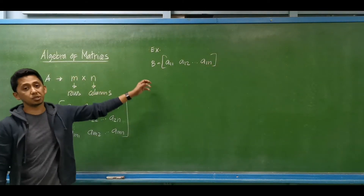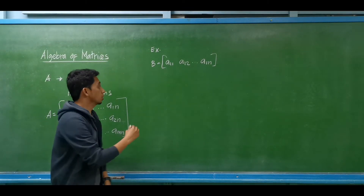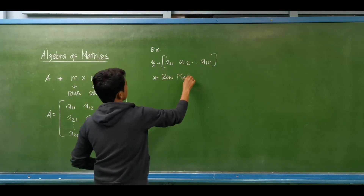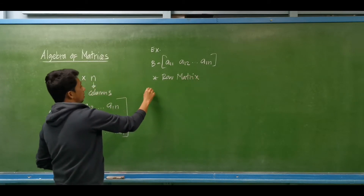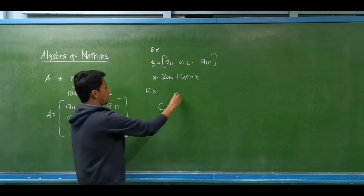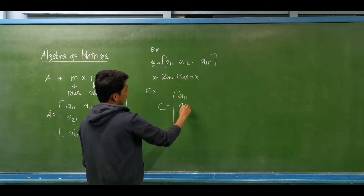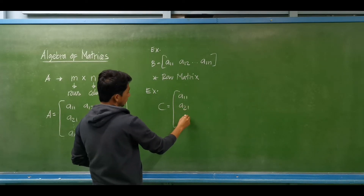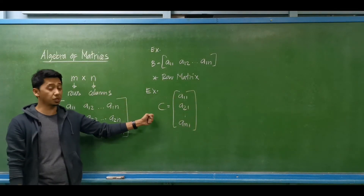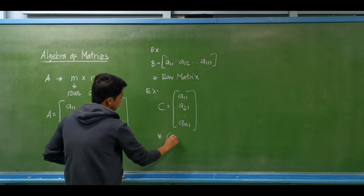Matrix B is a matrix consisting of a single row — this is an example of a row matrix. Then for another example, we have matrix C with elements A₁₁, A₂₁, up to Aₘ₁. Matrix C is a matrix consisting of a single column, so this is an example of a column matrix.